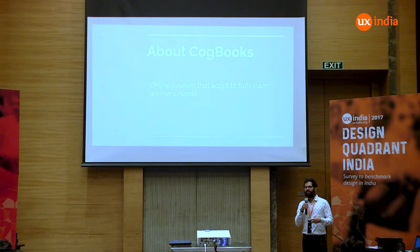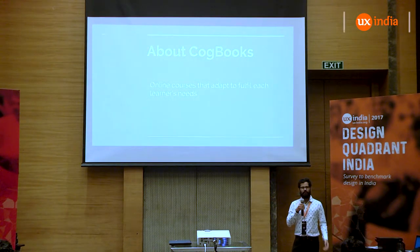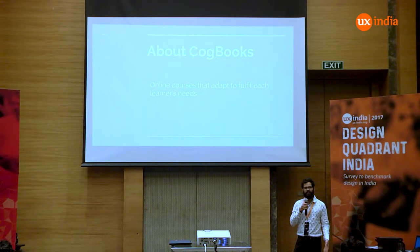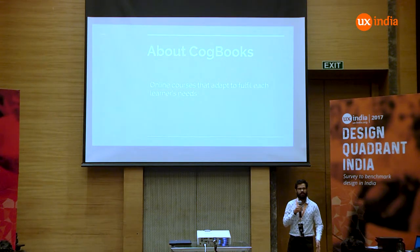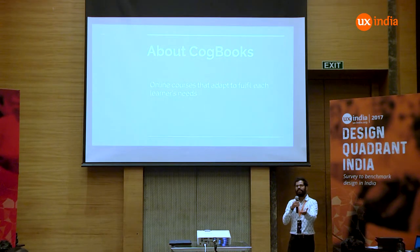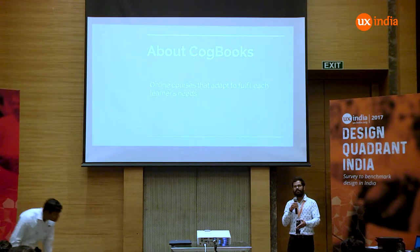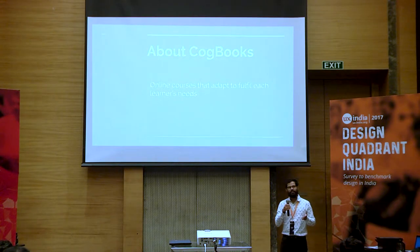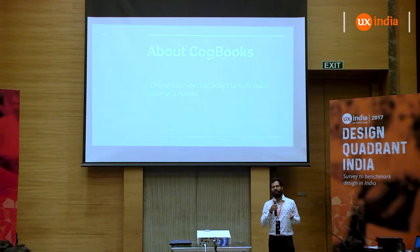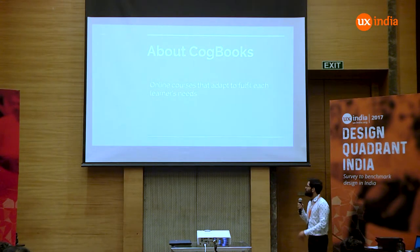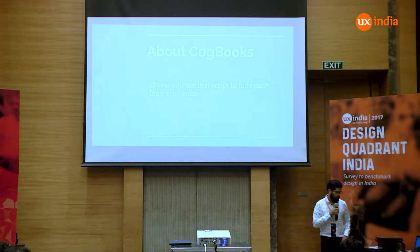This is done using machine learning to analyze how the students learn and then recommending the right activities for that student to learn. So if a senior person and a junior person both take the same course, both are not given the same activities to do. That is about Cogbooks, and this is what happened at Cogbooks.